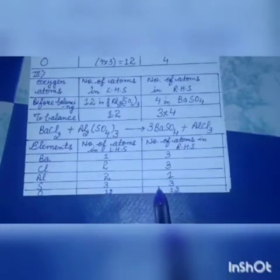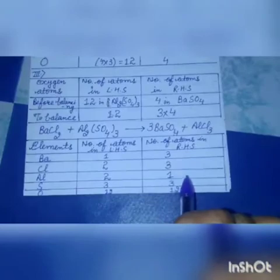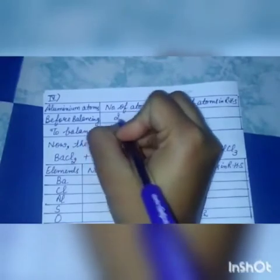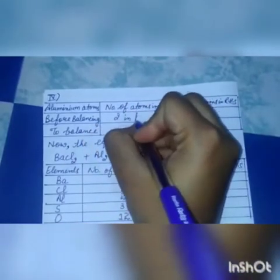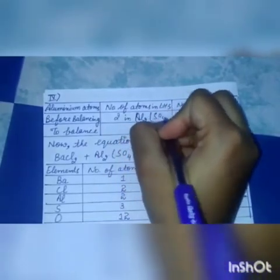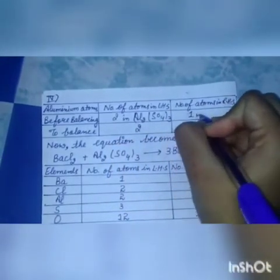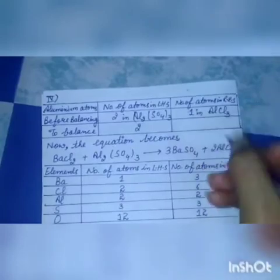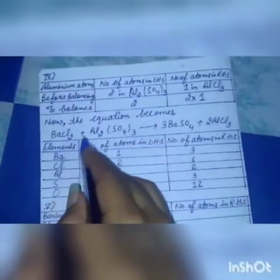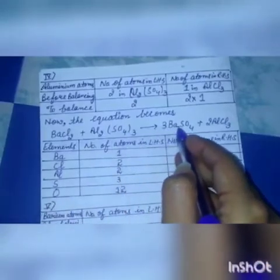As the atoms of both sulfur and oxygen are balanced, we will now balance aluminium. On the LHS there are two atoms of aluminium but on the right hand side there is only one atom. So we multiply AlCl₃ by two. The equation becomes: BaCl₂ + Al₂(SO₄)₃ → 3BaSO₄ + 2AlCl₃.